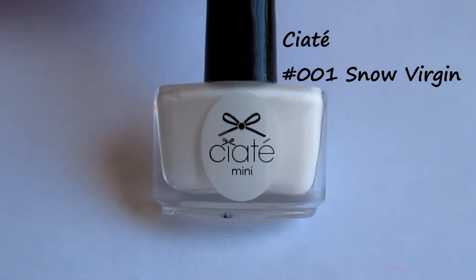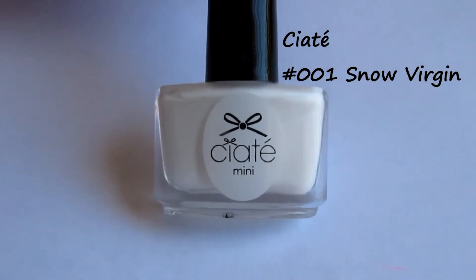Go with a white polish like this Chiarte Mini in Snow Virgin to draw a smaller circle inside the beige one.